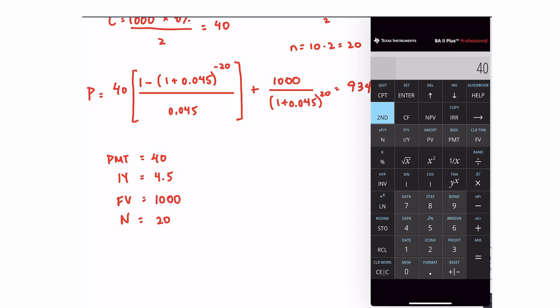So if I do that, 40 is payment, 4.5 IY, 1000 FV, 20 N, compute, present value. And you see that we get exactly the same number.